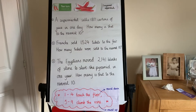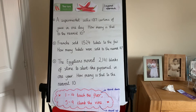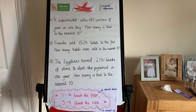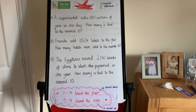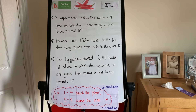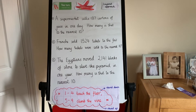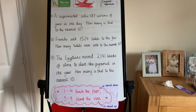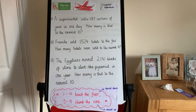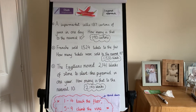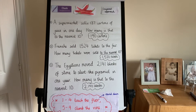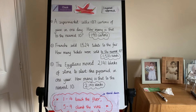Now have a go at chilli three. A supermarket sells 187 cartons of juice in one day — how many is that to the nearest ten? France sold 1,524 tickets to the fair — how many tickets were sold to the nearest ten? And the Egyptians moved 2,141 blocks of stone to start the pyramid in one year — how many is that to the nearest ten? Use the steps to success. The answers are: 190 cartons, 1,520 tickets sold, and 2,140 blocks. Well done — that's the end of rounding to ten.